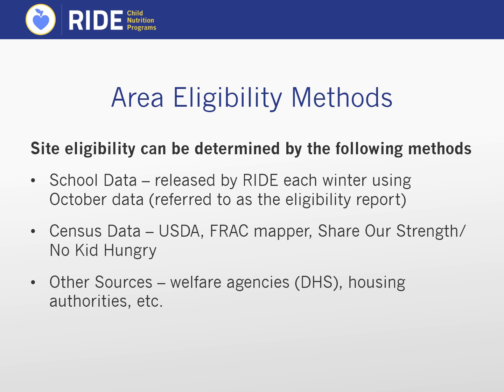You can also use census data, which can be verified through several different mapping resources linked at the end of this PowerPoint. Each mapping tool has instructions on how to interpret the results; generally, each map has results color-coded so non-eligible areas appear as one color and area-eligible areas appear as another. Additionally, some welfare agencies or housing authorities may use income criteria that match or are lower than the income guidelines used in the SFSP and therefore would qualify. For any of the above eligibility methods, the sponsor should make an initial determination and save the related documentation, but all determinations must be validated by RIDE before they can be approved.